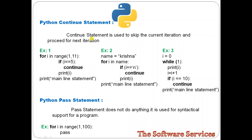The continue statement is used to skip the current iteration and proceed to the next iteration. That means, if a current loop is executed, a certain iteration will be skipped. For example, if the loop will be executed 10 times, we can use the continue statement.